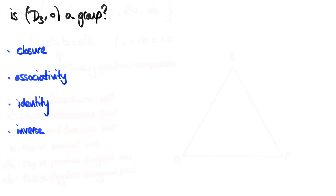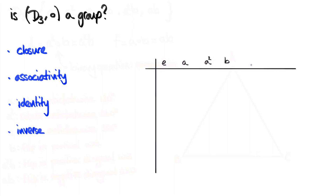There's a nice way to check these conditions through something called a group table, or Cayley table. We write all elements horizontally along the top and vertically along the side; where rows and columns meet, we compose those two elements. In the top-left part of the table we have E composed with E — the transformation that does nothing composed with itself — and clearly we end up doing nothing at all. So E composed with E is E.